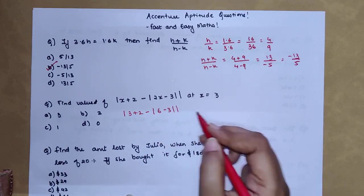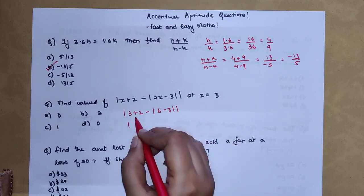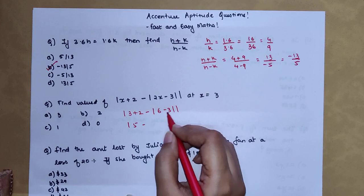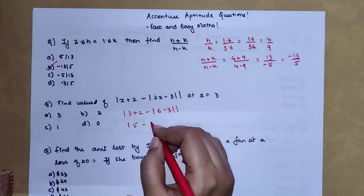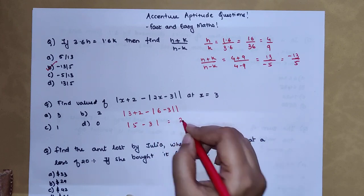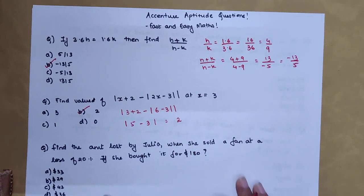Now we have 3 plus 2 which is 5, minus 6 minus 3 is 3, and that is a positive number. So if you take it outside the mod it will become just 3. Then your final answer changes to 2, so here option B is your correct option.